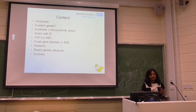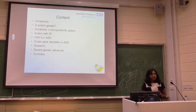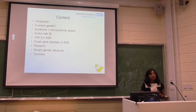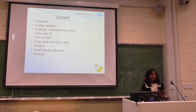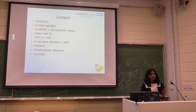I'll try to answer the very important question: is autism genetic? I'll try to distinguish between syndromic and non-syndromic autism — and of course in clinical genetics practice, what we often come across is syndromic autism, so I'll be touching upon that more. I'll talk a bit about autism presenting with intellectual disability, conditions we see in association with autism including copy number variants (CNVs), single gene disorders, the latest research and genetic advances in the field, and hopefully finish with a summary.